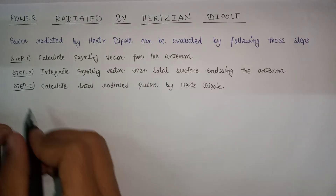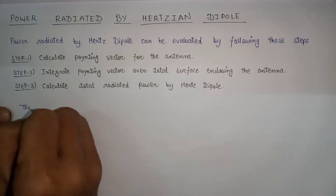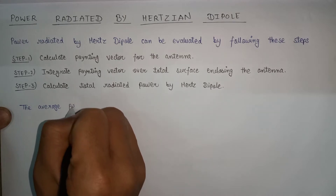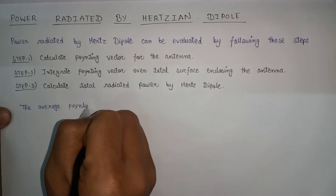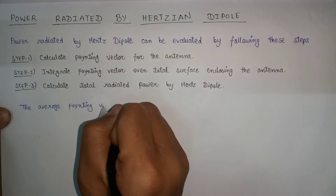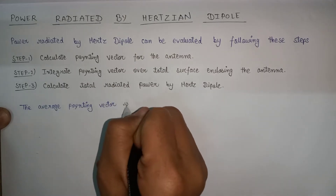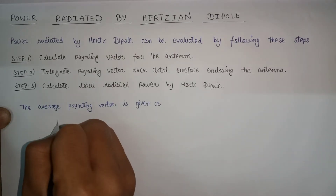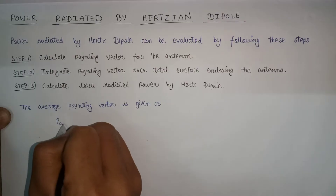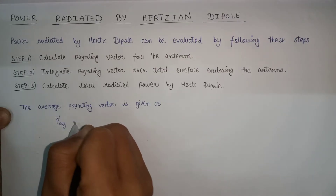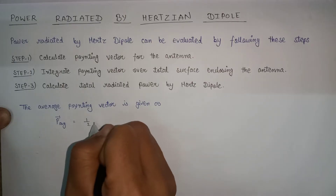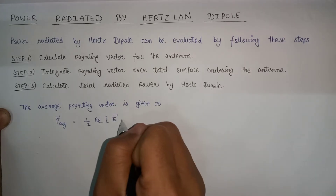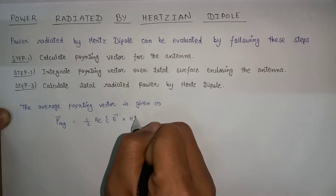The average Poynting vector is denoted by P_average (vector) and its value is equal to one-half into the real part of E cross H-star.